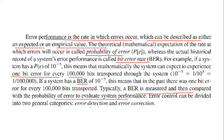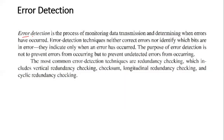Error control can be divided into two general categories: error detection and error correction. Error detection is the process of monitoring data transmission and determining when errors have occurred. Error detection techniques neither correct errors nor identify which bits are in error. The purpose of error detection is not to prevent errors from occurring, but to prevent undetected errors from occurring.